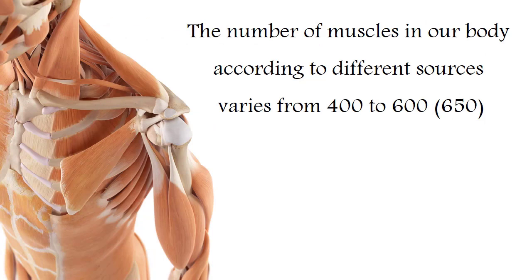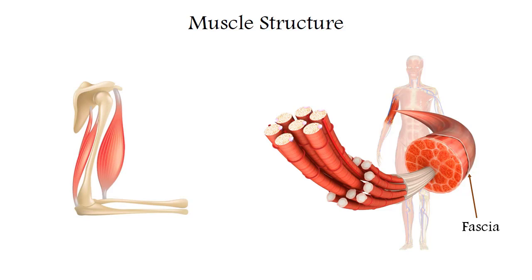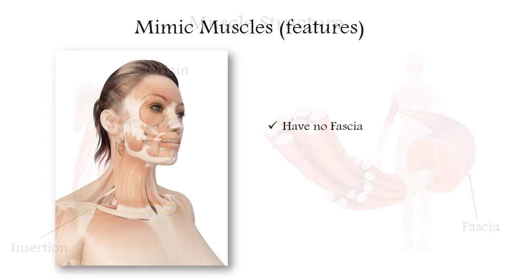According to various sources, the number of skeletal muscles in humans ranges from 400 to 600. Almost any muscle from the outside is covered with a special shell called fascia, and almost every skeletal muscle has at least two sites of attachment: the origin, where the muscle begins from one bone, and the insertion, the place of attachment to the other bone. The only exceptions are facial muscles, which have no fascia and are attached by their second end not to bone but to skin, thus pulling the skin to provide various grimaces.